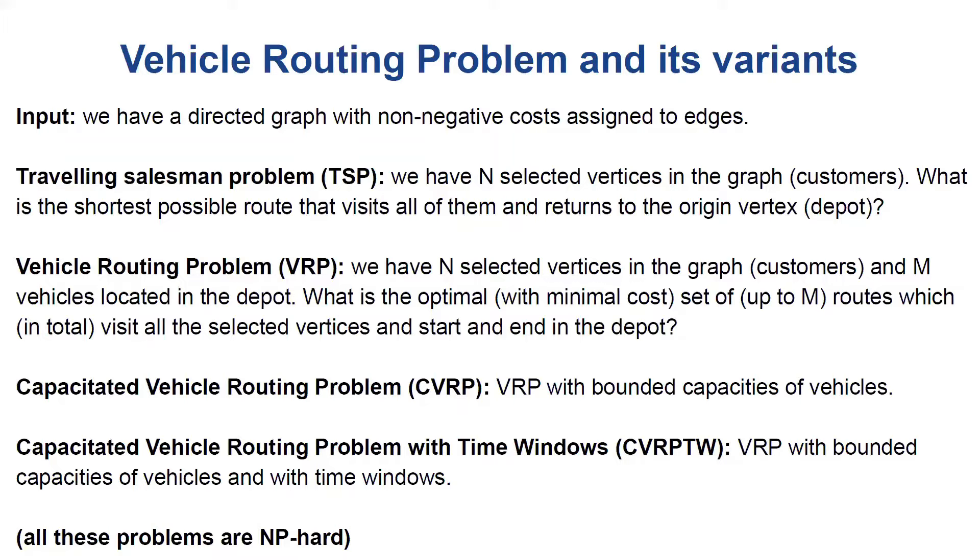There are different variants of this problem. For example, we may have capacitated vehicle routing problem, in which the vehicles have bounded capacities, or capacitated vehicle routing problem with time windows, in which vehicles have bounded capacities while customers have time windows in which they want to be served.